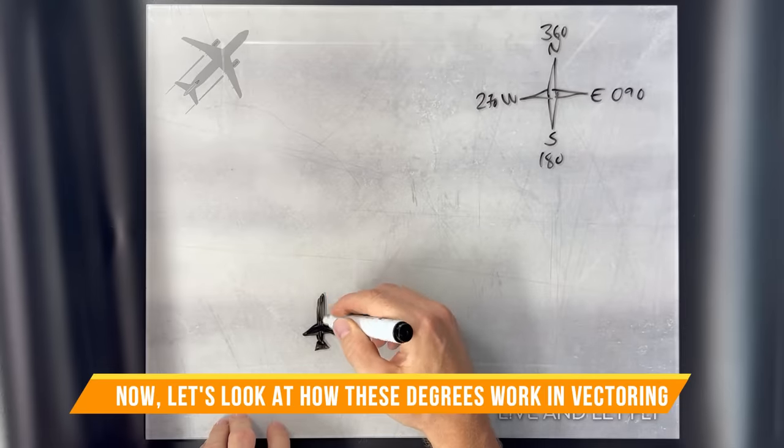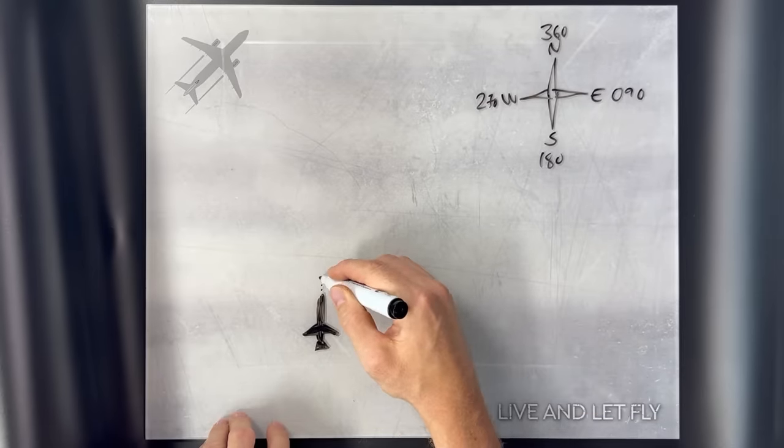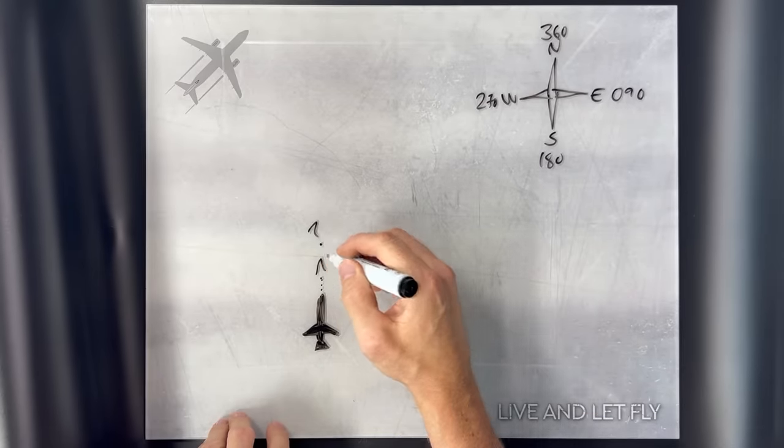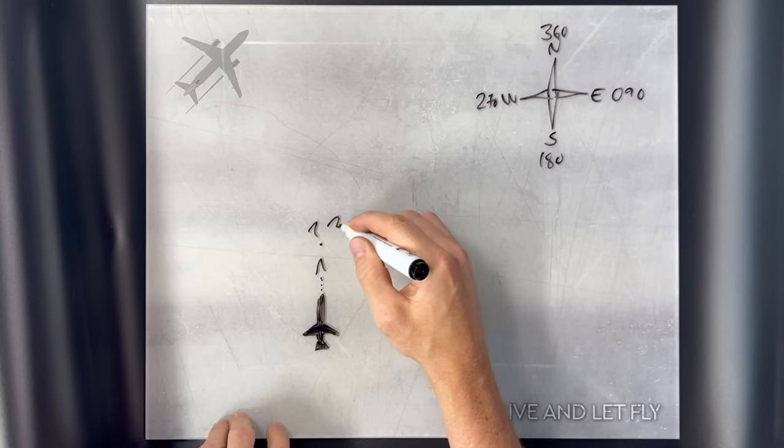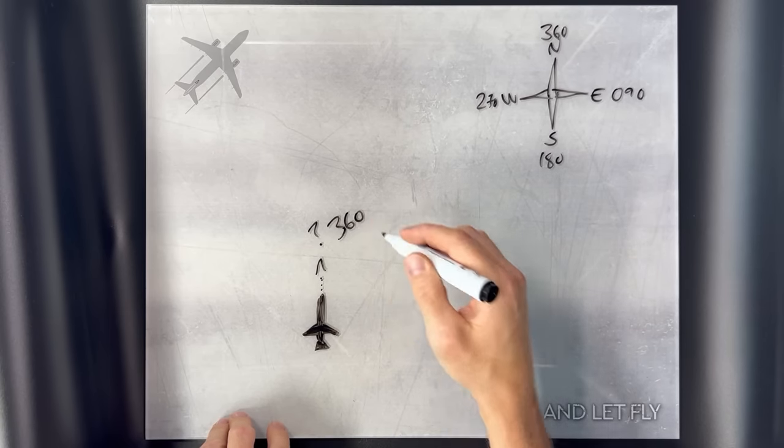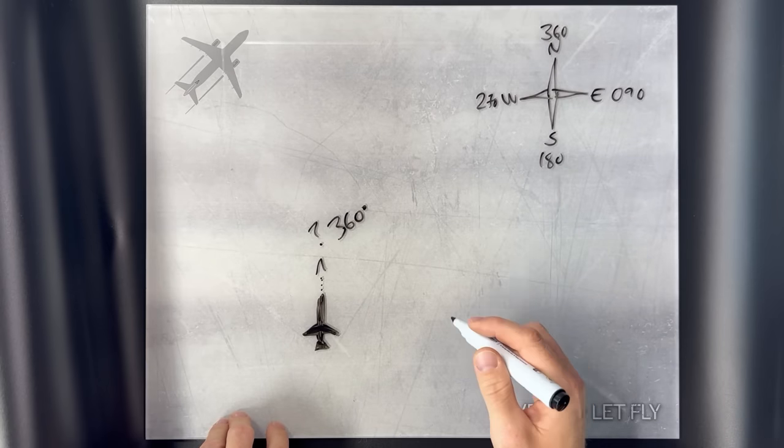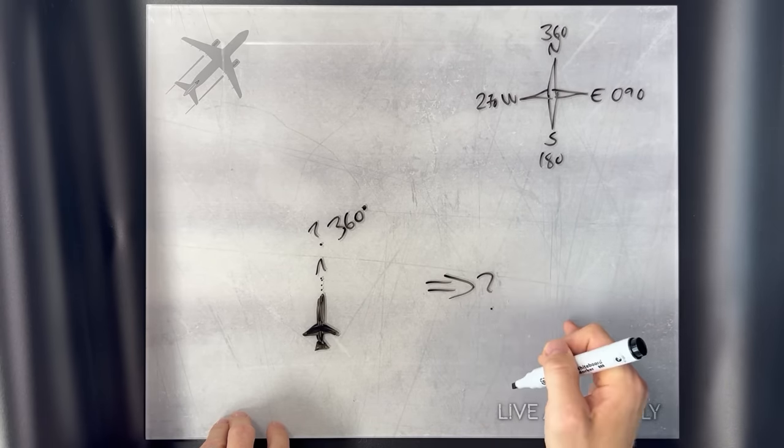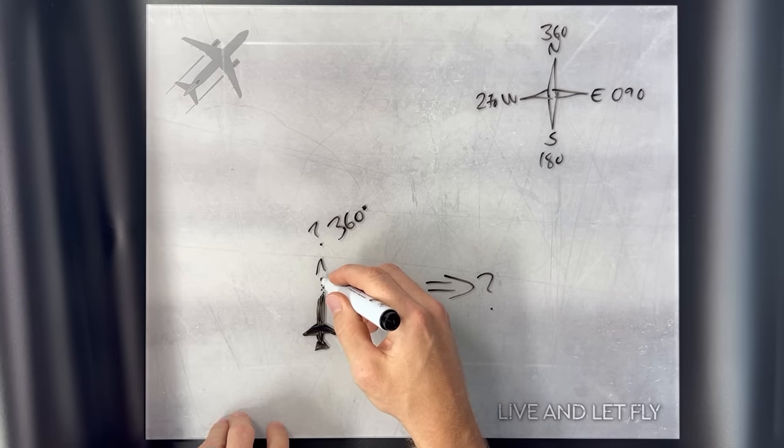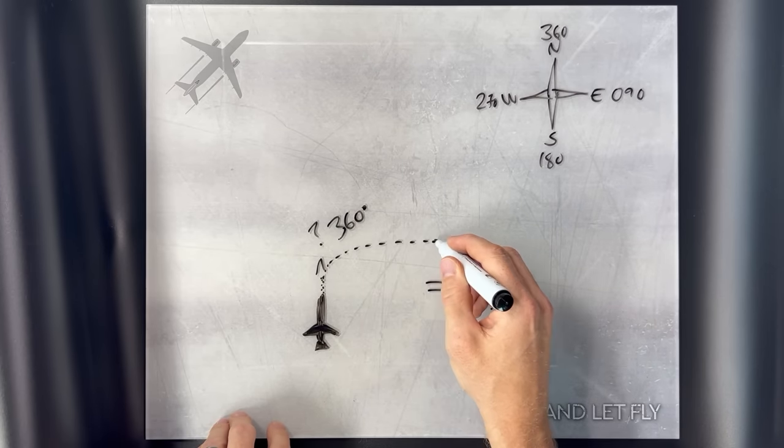Now, let's take a look at how these degrees work in vectoring. The north, east, west, and south are represented by 360, 090, 180, and 270. In this example, we have an aircraft flying directly towards the north, which is, as you all know by this point, heading 360.